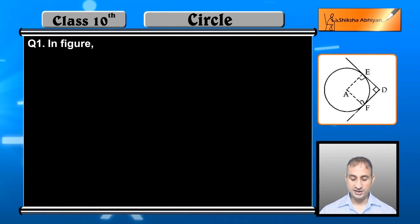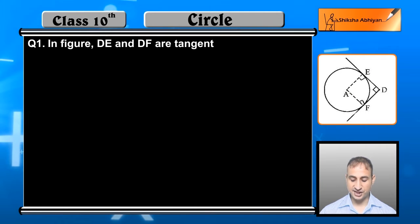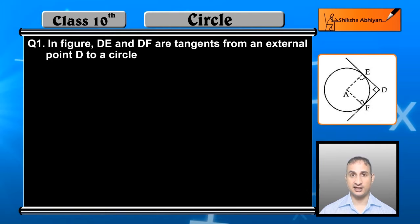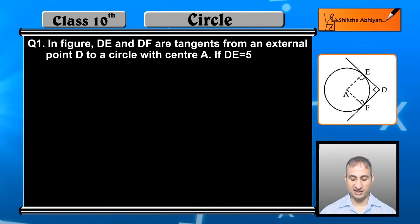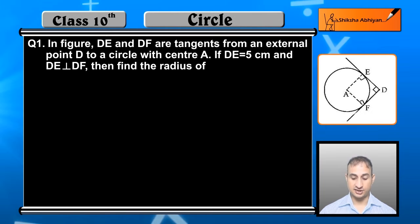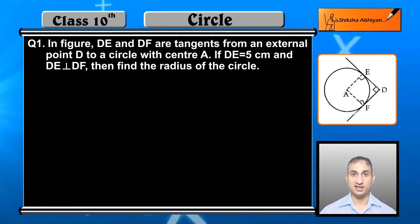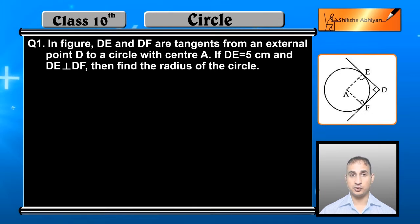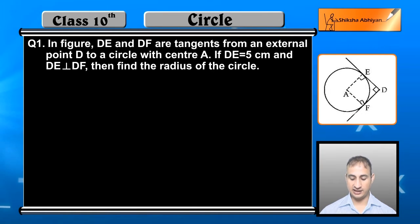The question is: in the figure, DE and DF are tangents from an external point D to a circle with centre A. Here D is an external point and DE and DF are two tangents. DA is equal to 5 cm, and DE and DF are perpendicular to each other, meaning angle EDF = 90 degrees, as shown in the figure.